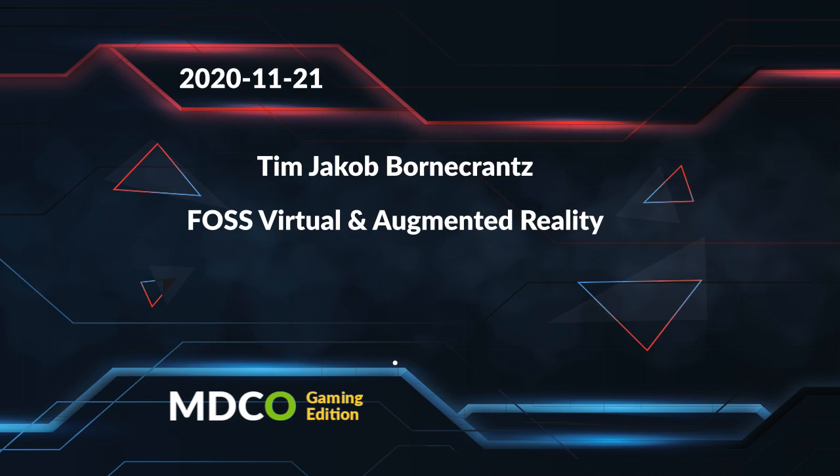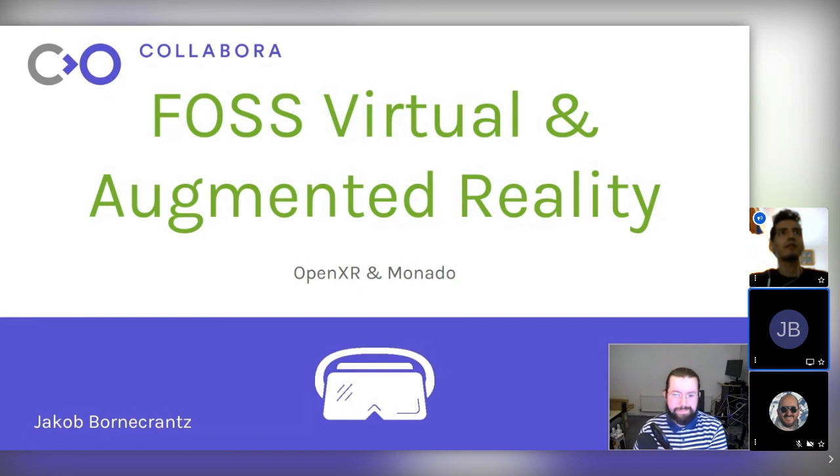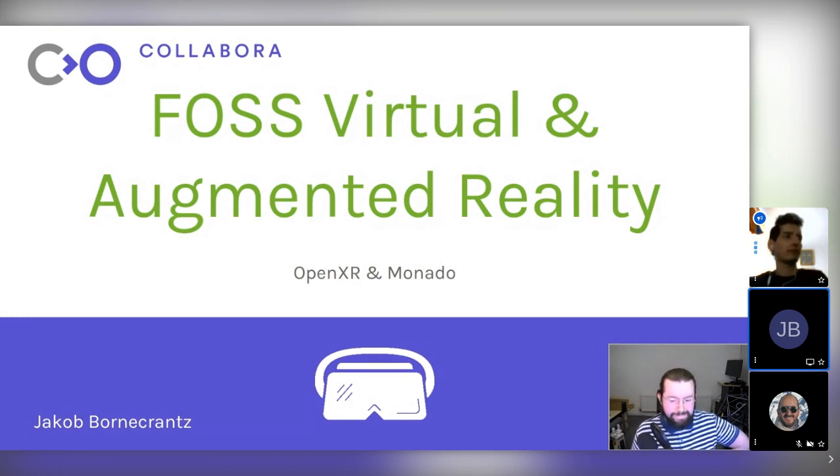Hello everybody, and welcome to the Post-Virtual and Augmented Reality Talk with Tim Jacob Bornecrans. Jacob works for Collabora with Graphics and Virtual Reality, XR Lead at Collabora and a member of the OpenXR Working Group. He has worked with Linux Graphics since 2006, starting with Tungsten Graphics and moving into VMware. In 2013, he, along with a friend, started the OpenHMD project. Then in the spring of 2019, was involved in Monado and OpenXR at GDC. Please welcome him.